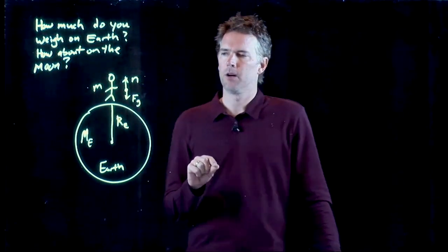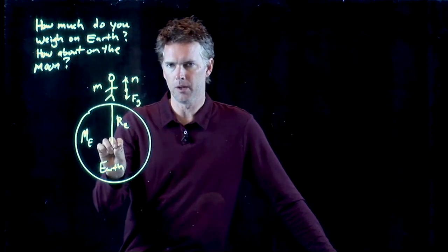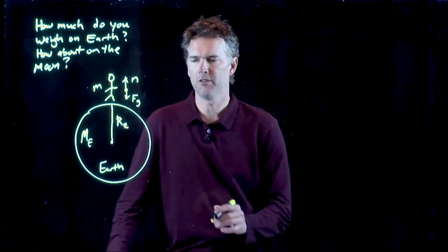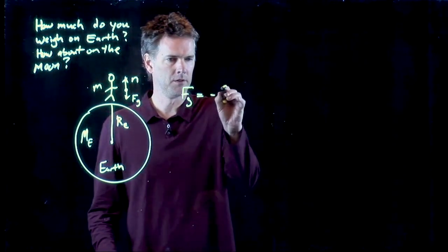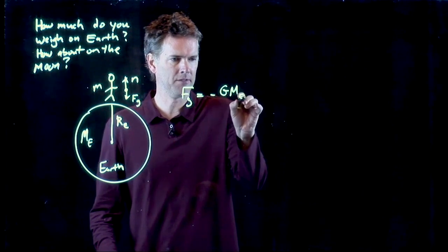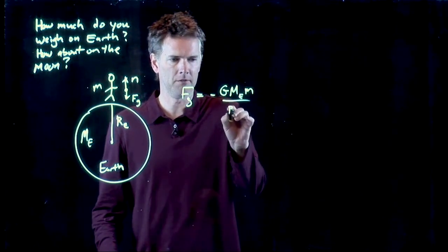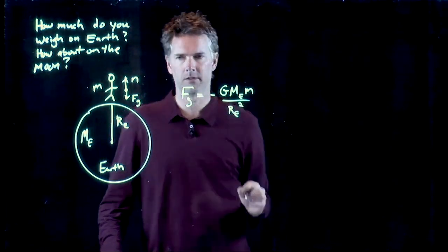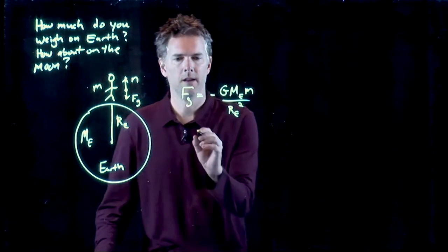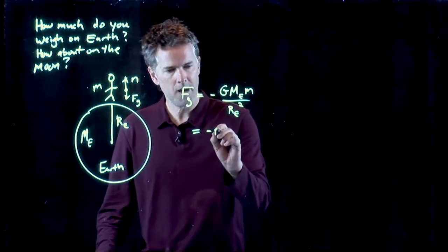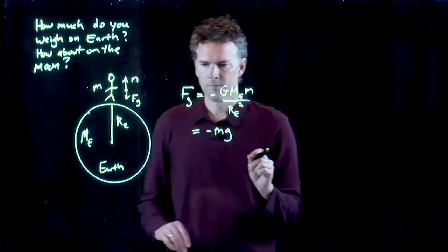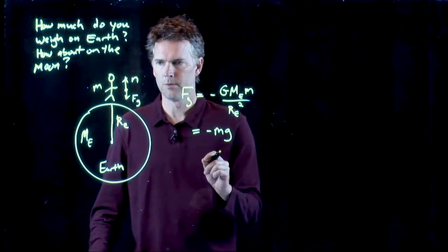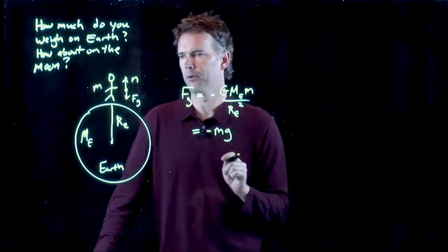What we just saw was gravity, due to the Earth pulling us down, has a force F sub g, which is negative g mass of the Earth, mass of us divided by the radius of the Earth squared, and we plugged in those numbers, and what we saw was that is negative m times little g, which we know. Little g is 9.8 meters per second squared.